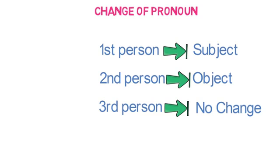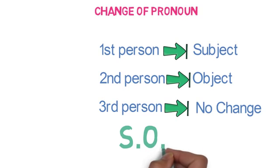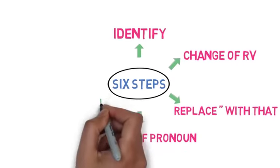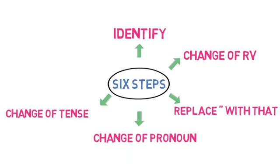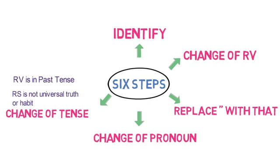You can remember this change with the acronym S-O-N, also called 'son'. Please remember the changes of pronouns properly: first person will be converted to subject, second person will be converted to object, and third person will remain unchanged. The fifth step is change of tense. It will happen when the reporting verb is in past form and the reported speech is not a universal truth or habit.